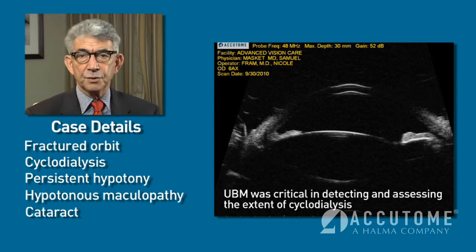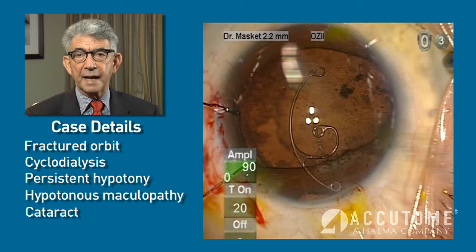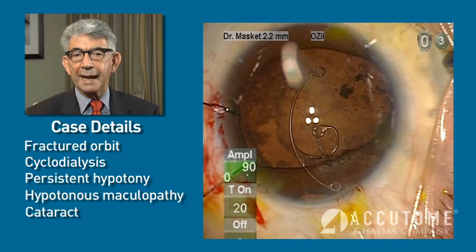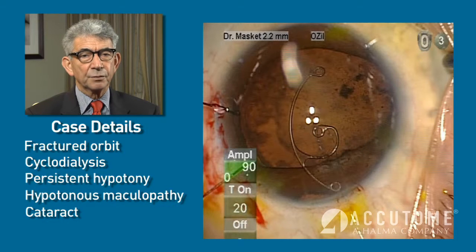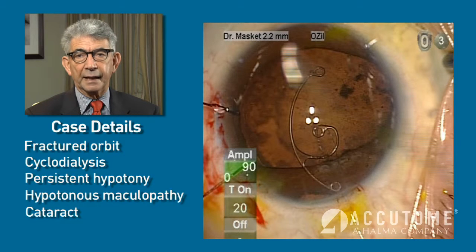We were able to use the Accutome UBM to define the presence of the cyclo-dialysis and measure its extent. Then at surgery, I used an AMED segment to close the cyclo-dialysis cleft and reverse the hypotony. Absent the UBM, I don't think we would have been able to pinpoint the location and extent of the cyclo-dialysis. It was very helpful in that particular case.